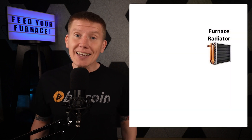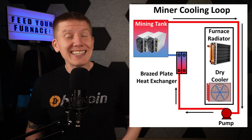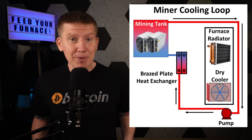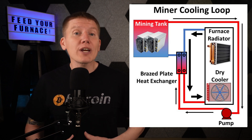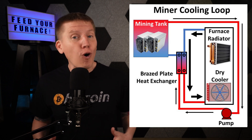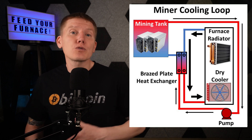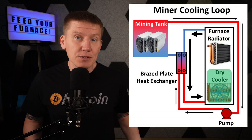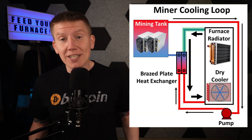With the water-to-air radiator selected, the next part of the design is connecting the radiator to the rest of the miner cooling loop, and this is where things can get a little tricky. The goal here is to keep the miners running non-stop. This means that a continuous flow of cooling fluid must pass through the Bitcoin miner brazed plate heat exchanger at all times. We'll need some way to control how much fluid goes through the radiator in the furnace and how much fluid goes through the dry cooler outside the house, so that all of the fluid returning to the heat exchanger stays cool enough to keep the miners from overheating.